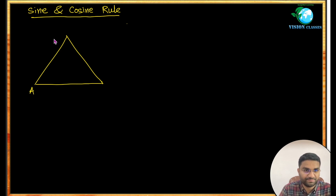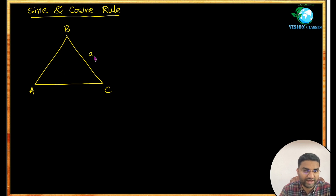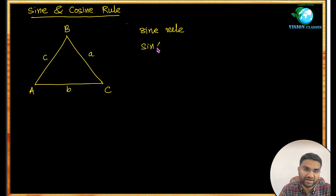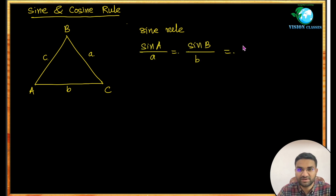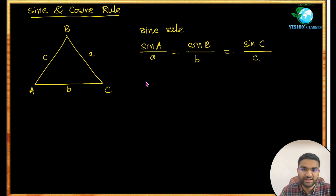We have a triangle ABC where the side in front of angle A is small a, then b and c. The sine rule states: sine A over side a equals sine B over side b, which equals sine C over side c.